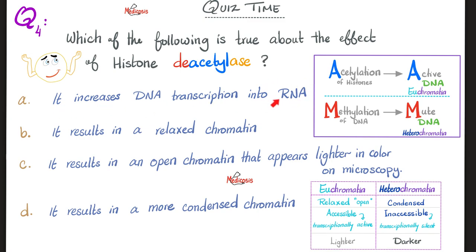So let's try each choice. It increases DNA transcription into RNA. Well, deacetylation is the opposite of acetylation. If acetylation makes me active, then deacetylation makes me inactive. So choice A is incorrect. Let's try B. It results in a relaxed chromatin. Well, we said this is inactive. Inactive meaning condensed, not relaxed. Heterochromatin, not euchromatin. Let's try C. It results in an open chromatin that appears lighter in color on microscopy. Again, if it's deacetylation, it's not active. It is not euchromatin. C is also incorrect. Let's try D. It results in a more condensed heterochromatin. Yes, indeed, because it's less active, and heterochromatin is condensed, inaccessible, and it appears darker.